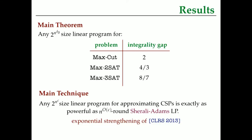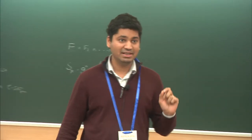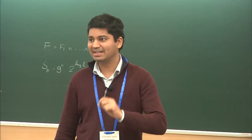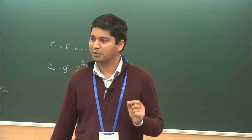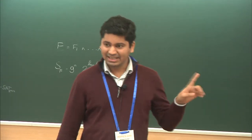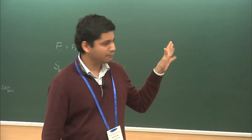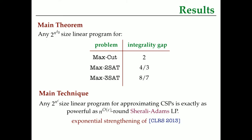Incidentally, it turns out that this 2 to the n to the delta naught result for max cut is tight. It turns out that you don't need 2 to the n size LPs to replicate the performance of SDPs — you can do it with some 2 to the n to the delta naught for some fixed constant delta naught less than 1. This was proven just a few months ago. But okay, that's not what this talk is about.